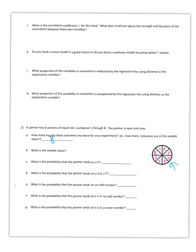And what is the sample space? The outcomes that are equally likely are 1 through 8 — so they're all listed. What is the probability that the pointer lands on a 3?